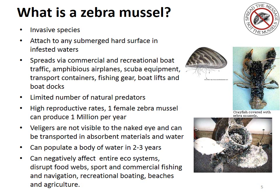They have a limited number of natural predators and very high reproductive rates. One female zebra mussel is able to produce up to one million zebra mussels each year. Up to five weeks of their life cycle, they are called veligers. In this state, they are not visible to the naked eye and can be transported in absorbent materials in standing water.